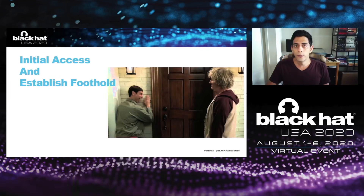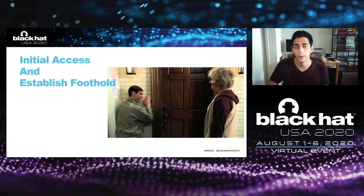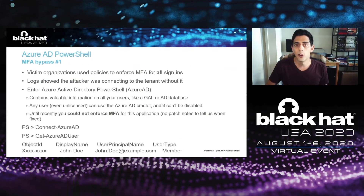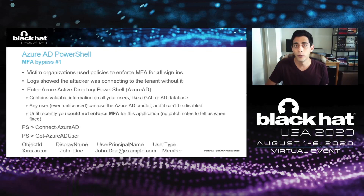Our first case studies are going to talk about initial access — what are the ways that targeted threat actors are finding their way into Office 365? After that, we'll talk about some of the ways they're maintaining their access, establishing persistence so they can access a tenant for days, weeks, months, maybe even years. Our first case study is going to walk us through an MFA bypass using PowerShell. Conditional access is a really strong way to ensure that you are securing your tenant, and these clients were all using conditional access to enforce MFA for all logons. But somehow, the attacker was actually managing to get around this.